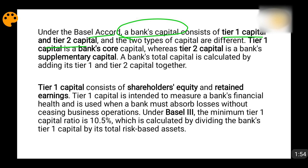Tier 1 capital can be further subdivided into additional tier 1 capital and CET1 capital — that is common equity tier 1 capital — which will give you the common equity tier 1 ratio, and then the tier 1 ratio. So all of these things will be discussed. First of all, we are going to see the difference between tier 1 capital and tier 2 capital.